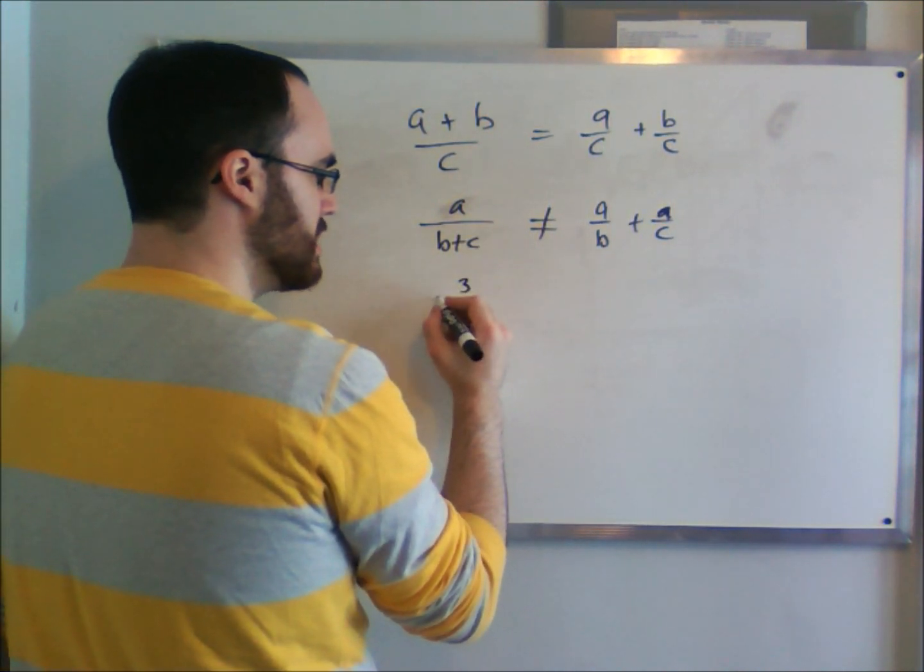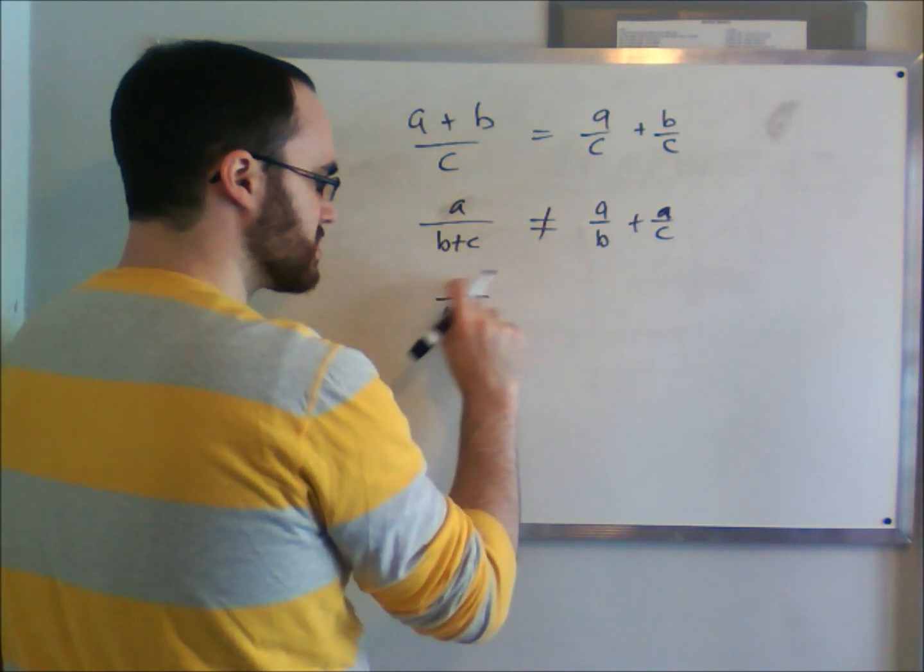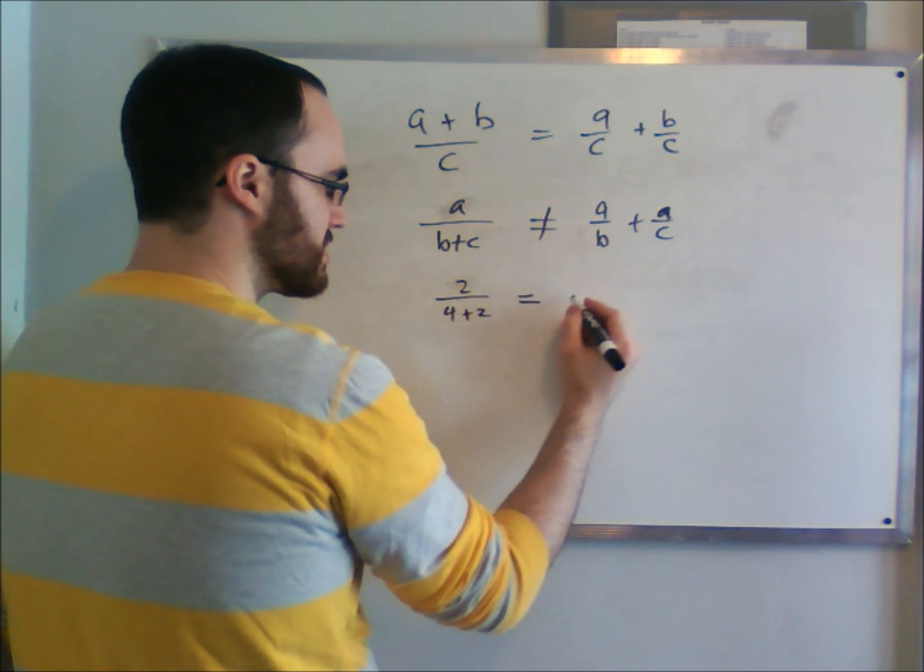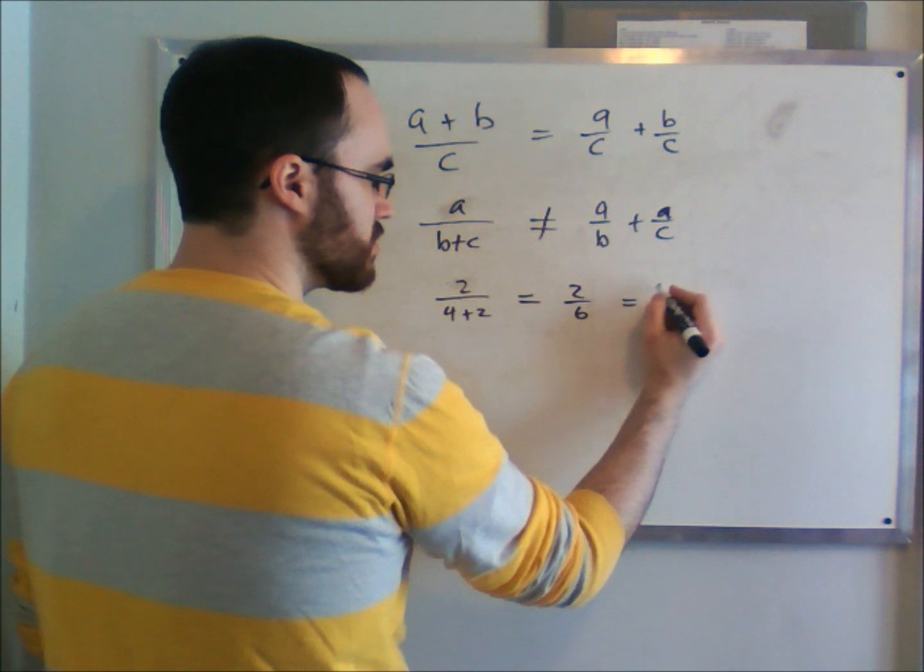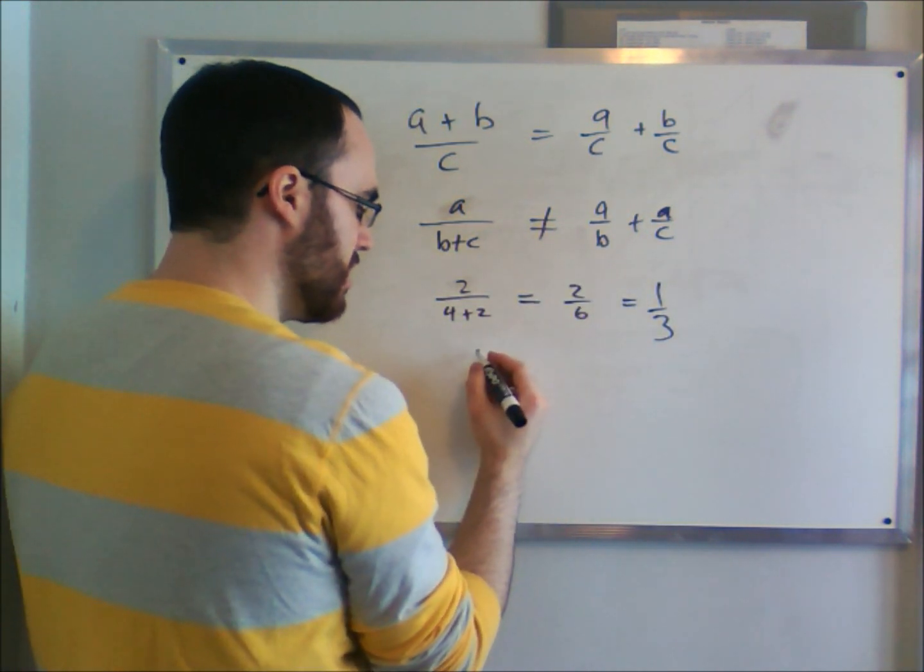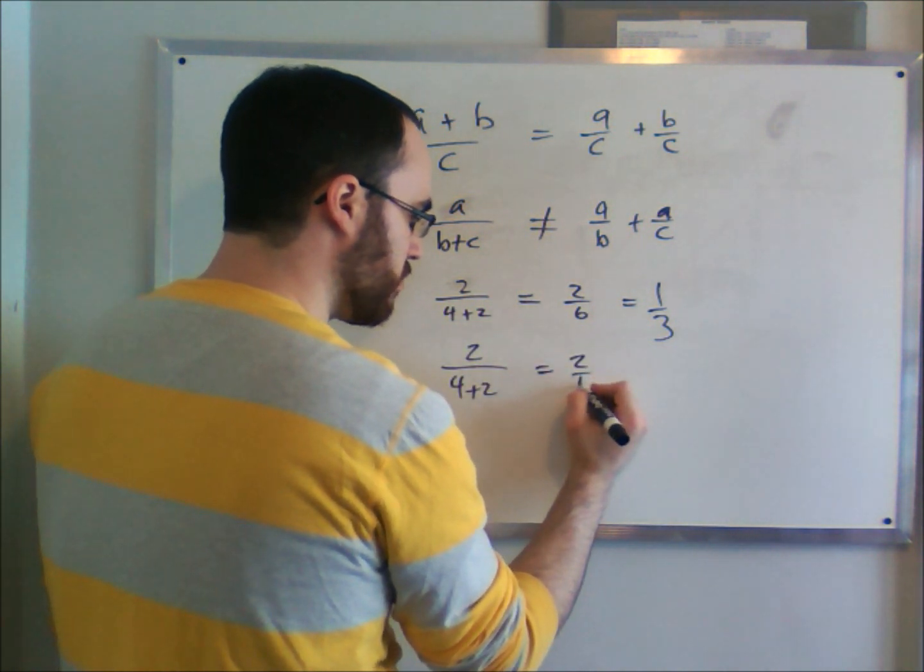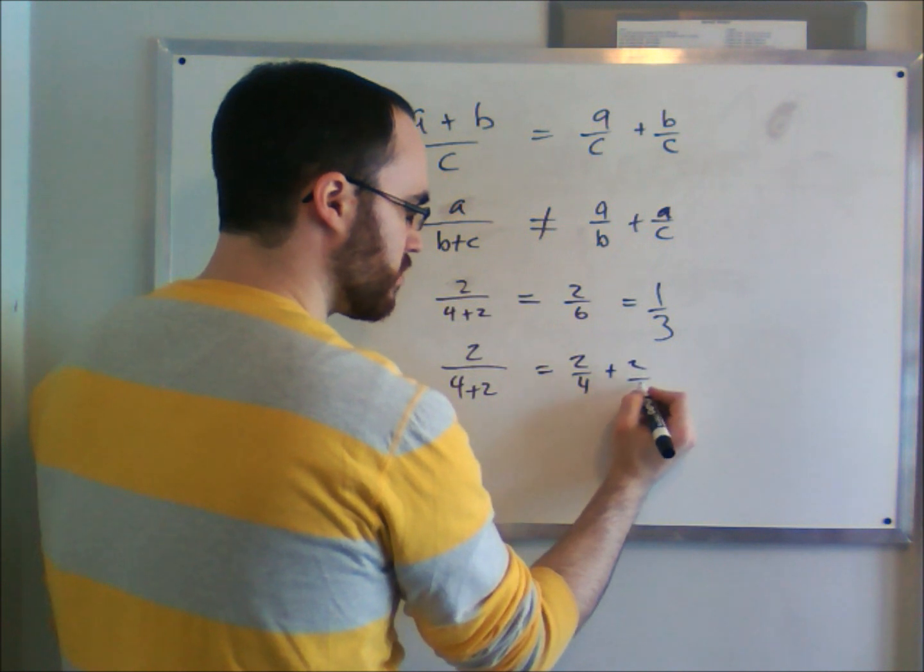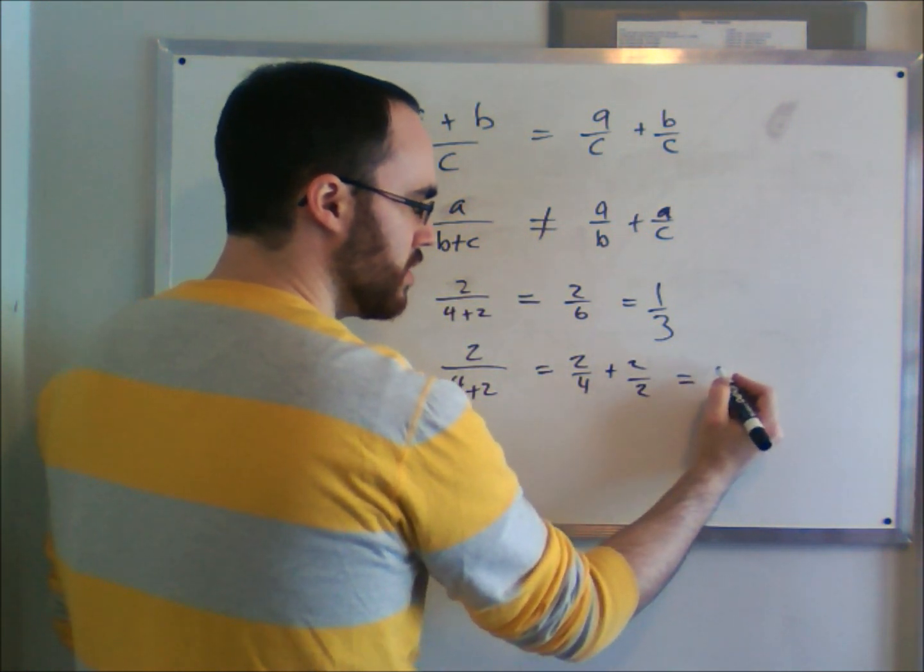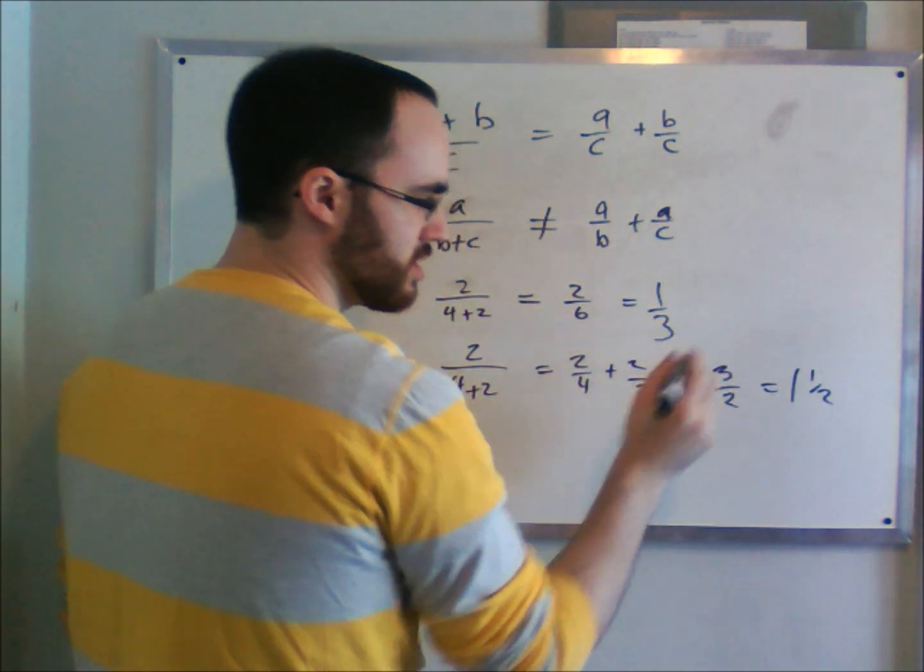Let's say we have 2 over 4 plus 2. So 2 over 4 plus 2, if we sum this up, we get 2 out of 6, which is equal to 1 third. If we do it the way this was, which is the incorrect way, we would get 2 over 4 plus 2 is equal to 2 over 4 plus 2 over 2. This is 1, this is a half. This would equal 1 and a half or 3 halves. And these two things are not the same.